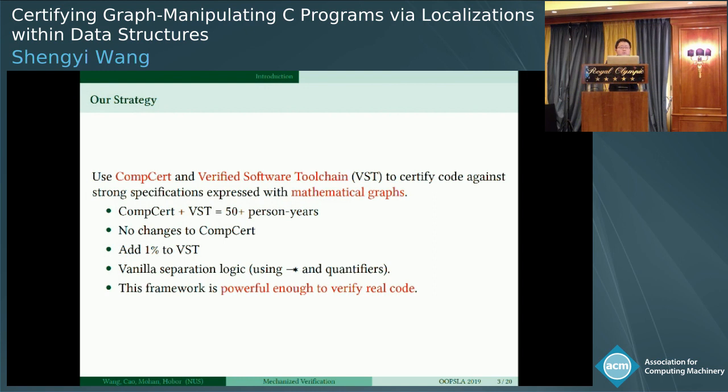Our strategy is we use two large Coq libraries. One is CompCert, a certified C compiler which can provide formal semantics of the C programming language. The other is Verified Software Toolchain (VST for short), which provides a program logic based on the semantics of C provided by CompCert. With the help of these two large libraries, we can certify our graph manipulating code against strong specifications expressed with mathematical graphs. CompCert and VST cost more than 50 person-years worth of development effort.